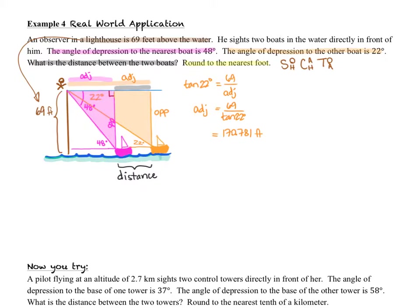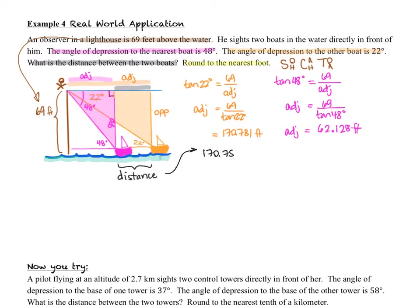Next, we need to find the adjacent of the pink triangle. The tangent of 48 degrees equals 69 over the adjacent, so the adjacent equals 69 divided by tangent of 48 degrees. Our calculator gives us a distance of 62.128 feet. We found the two adjacents, and the last thing we need to do is find the difference between them to get the distance between the two boats. Subtracting 62.128 from 170.781 gives us, rounded to the nearest foot, 109 feet.